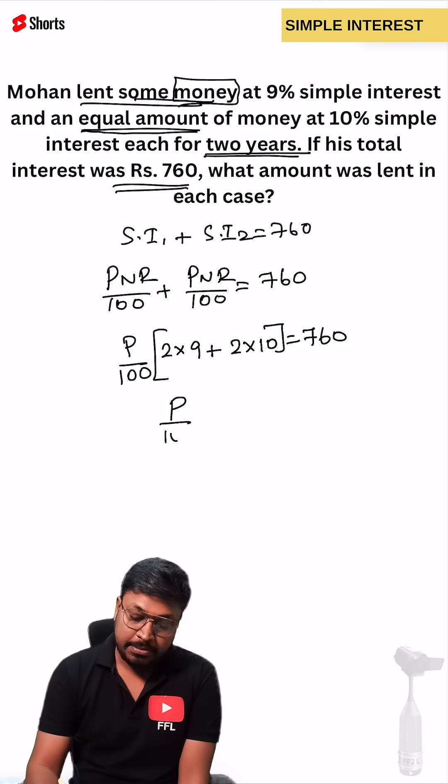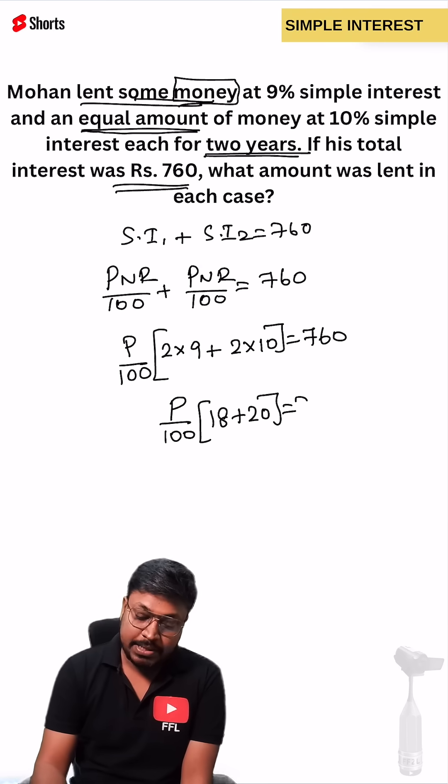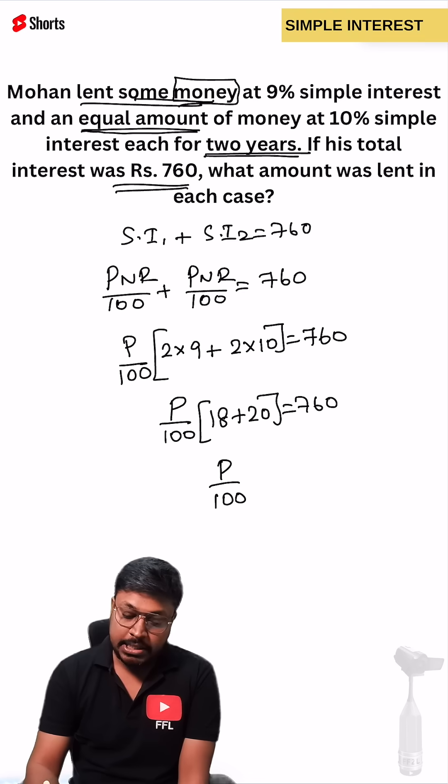P divided by 100, this will be 18 plus 20 equals 760. So P divided by 100 into 38 equals 760. We can cancel 38 one time, this will be 2 times 20. So principle equals 2000.